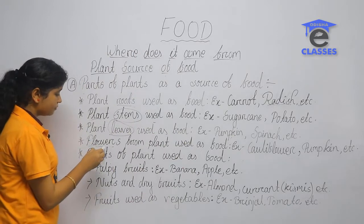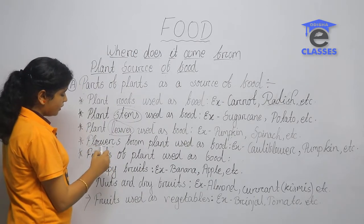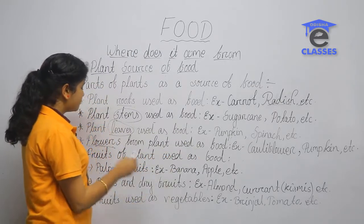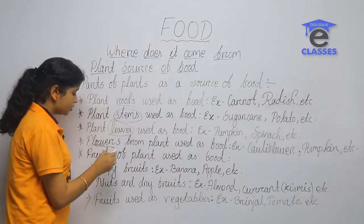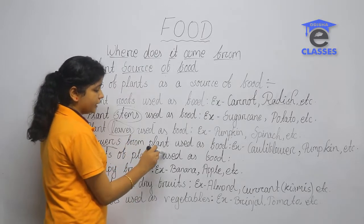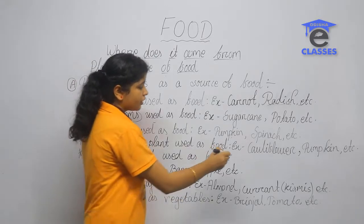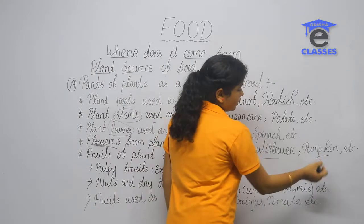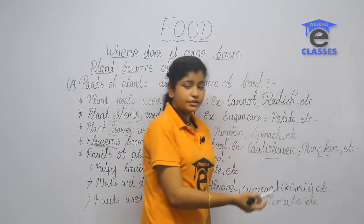Flowers from plants are also used as food. For example, cauliflower and pumpkin flowers.